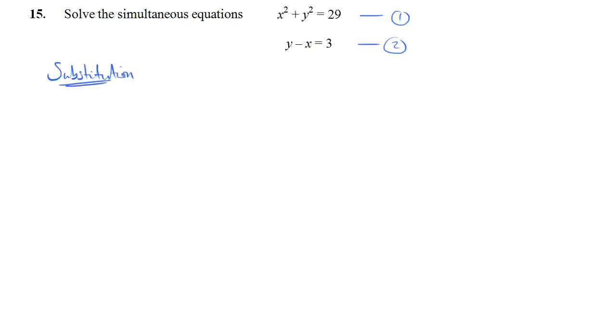So you need to have one bit that you can substitute straight into the other. Now this is not quite in the form that we want. It's not in the form y equals. But we can easily achieve that by adding x to both sides. So if we do that, we'll have y is equal to x plus 3. And this is now perfect for substitution. I can substitute that into equation 1. So if we do that, from equation 1 we're going to have x squared. And then instead of y squared, we now have x plus 3 squared.